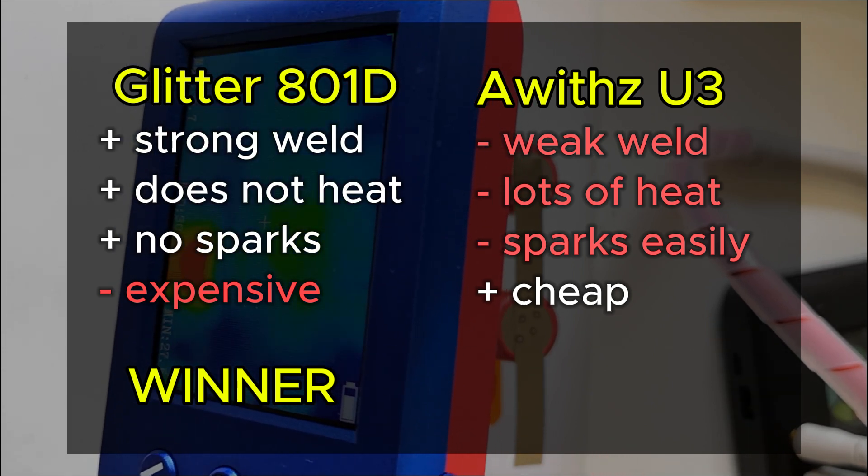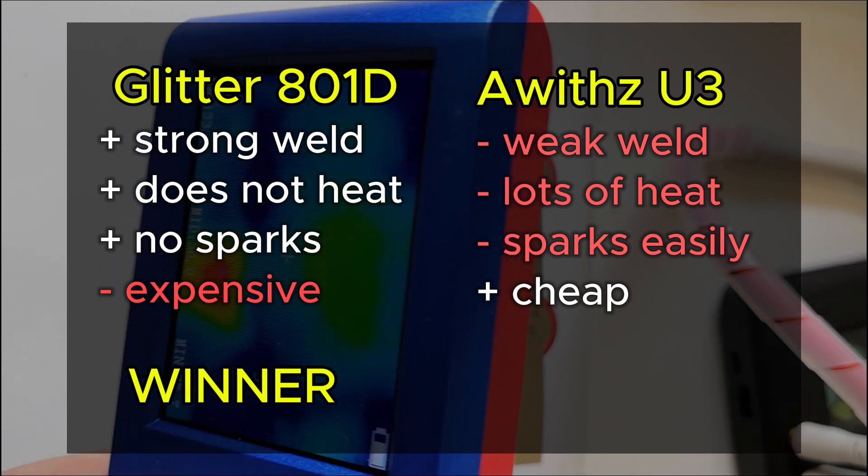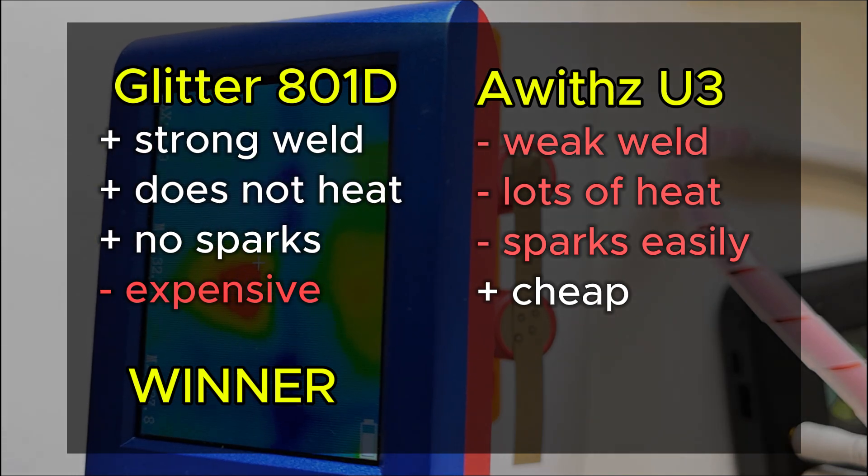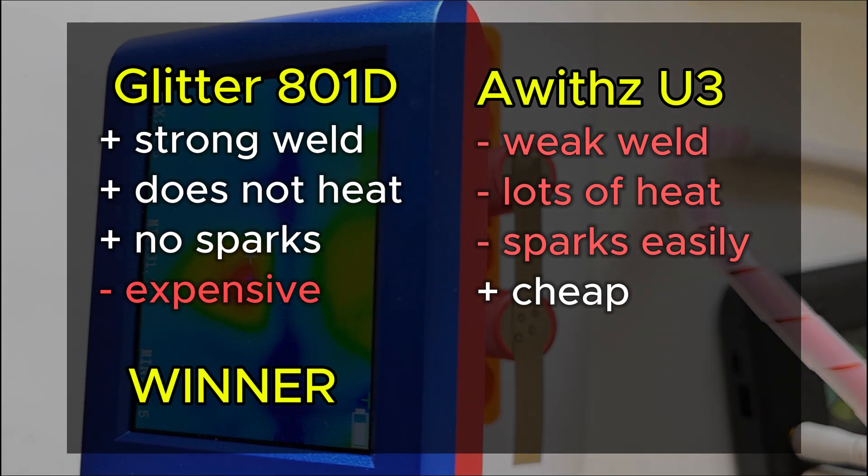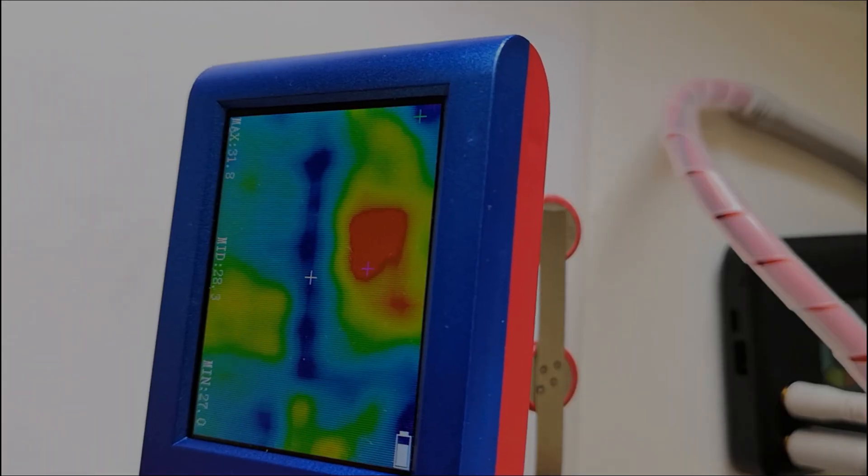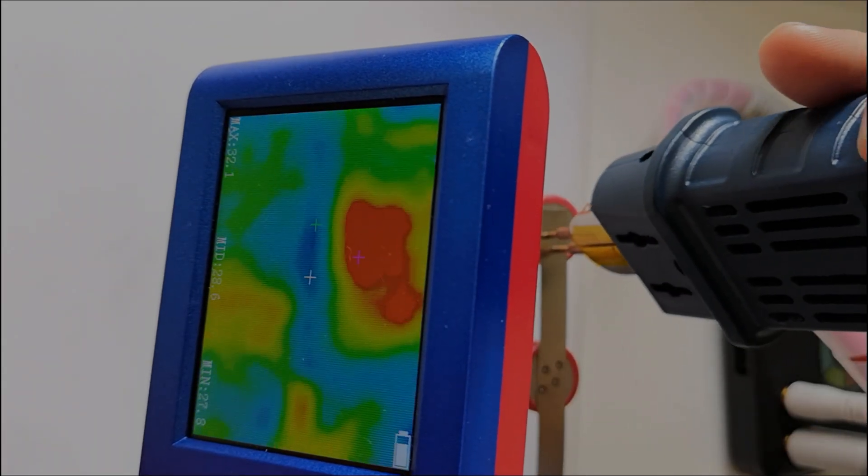The winner is the Glitter. It makes better welds. But if you're on a budget, you can use a portable welder like the Avis, but you must use thinner strips or nickel plated ones. They are easier to weld, but not as good electrical conductors.